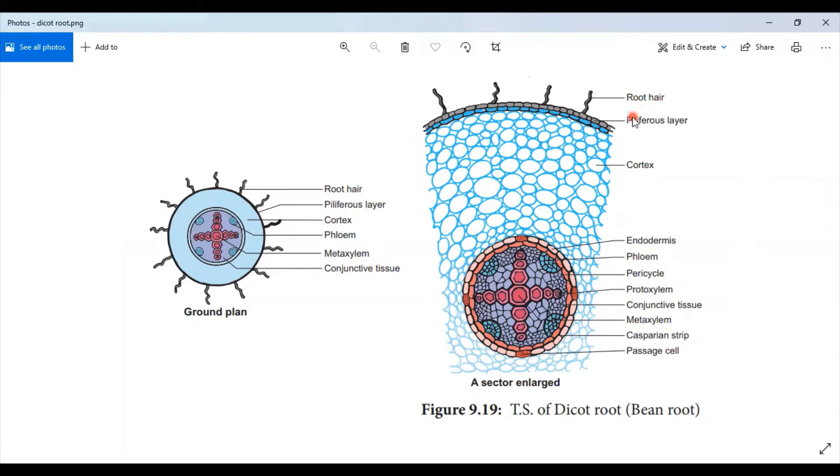Below this, cortex is present. Cortex is simple, multi-layered and consists of thin-walled parenchyma cells with intercellular spaces to make the gaseous exchange easier.